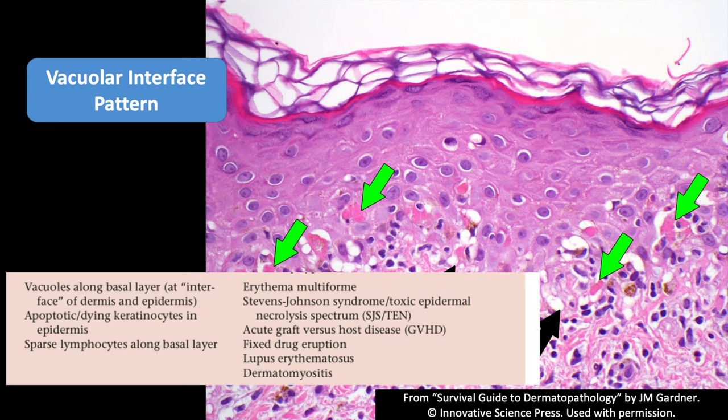Here are some examples of diseases with interface dermatitis: erythema multiforme and the Stevens-Johnson/toxic epidermal necrolysis spectrum, acute graft-versus-host disease, fixed drug eruption, lupus, and other connective tissue diseases like dermatomyositis, and others. It's really helpful to find that pattern because it can be very useful to the treating physician.